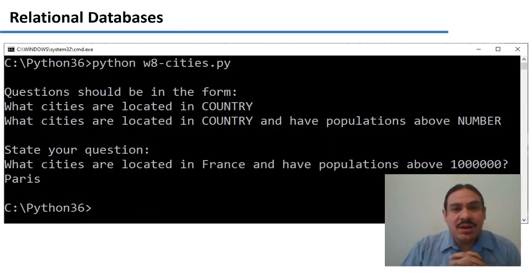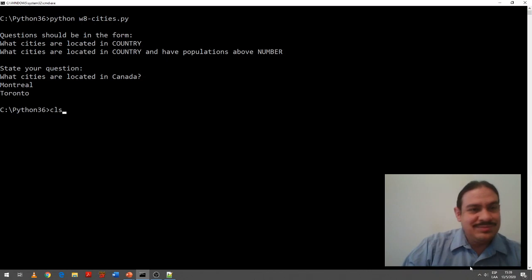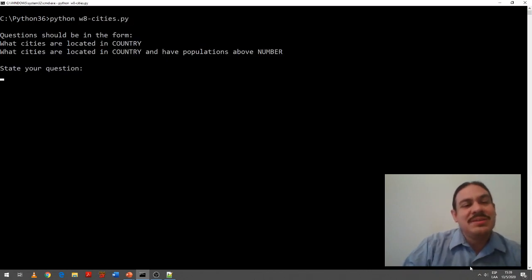Let's look at this code. This is on your canvas. It's a little program called W8Cities. It listens to questions like, what cities are located in a country? What cities are located in a country and have populations above a number? And just to show you, what cities are located in Canada, for example?